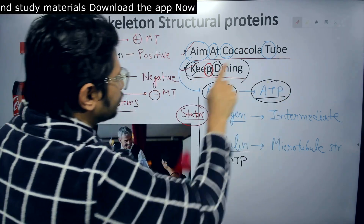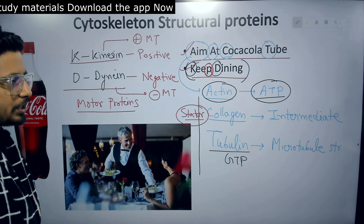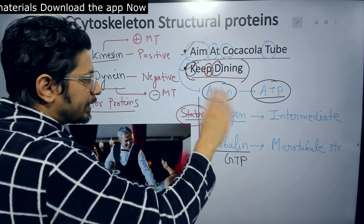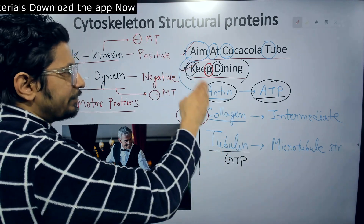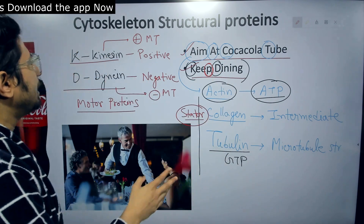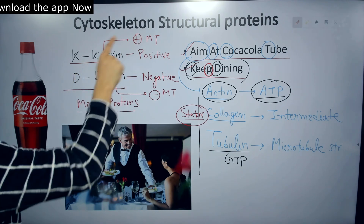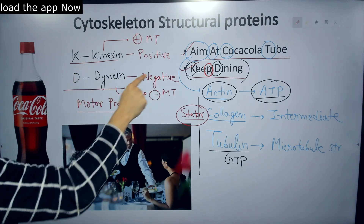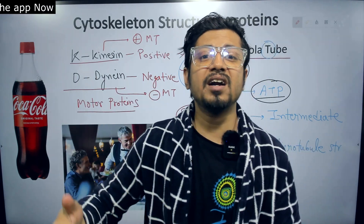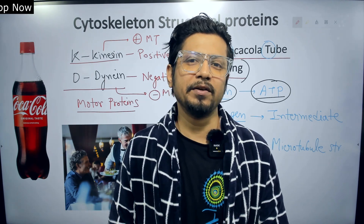From just two sentences — 'Aim at Coca-Cola tube' and 'Keep dynein' — we can establish that actin is associated with ATP, collagen is a type of intermediate filament, microtubules are made of tubulin, and tubulin requires GTP. Kinesin moves toward the positive end of the microtubule, and dynein moves toward the negative end. This is how easy learning can be with the help of mnemonics and quick revision videos.